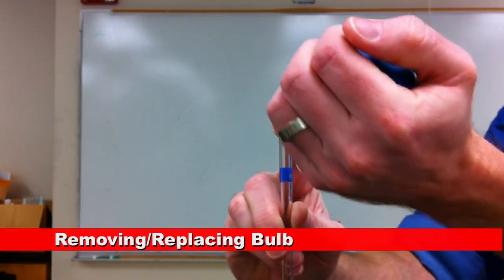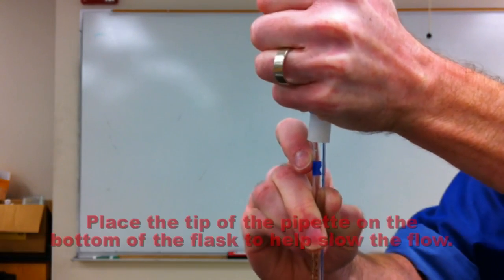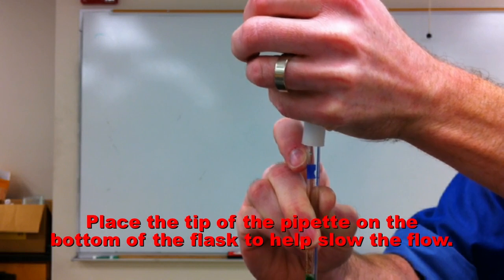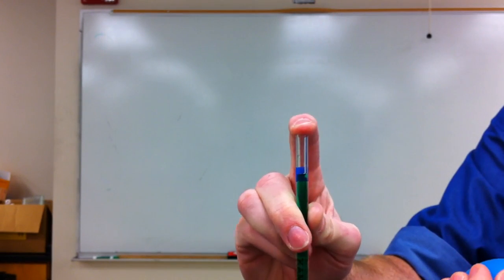Do not use your index finger to hold your pipette. Keep your index finger free so that you can quickly replace the bulb with your finger so that you do not lose significant volume when transferring.